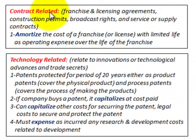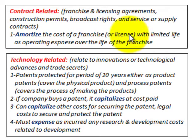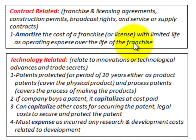Now let's look at contract-related intangibles. Those would be franchise and licensing agreements, construction permits, broadcast rights, and service or supply contracts. Number one, you amortize the cost of the franchise or license with a limited life as an operating expense over the life of the franchise.